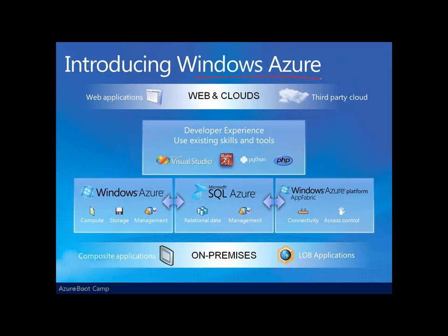Now let's switch our attention to Windows Azure. Windows Azure is actually a set of cloud technologies, each providing a set of services to application developers. We have Windows Azure itself — a Windows-based environment for running applications and storing persistent data on servers in Microsoft data centers. Your applications will reside in the compute portion of Windows Azure, and the data in storage. This storage is not SQL Server, not a relational database. We'll find out in a little bit about the three different types of storage provided by Windows Azure.